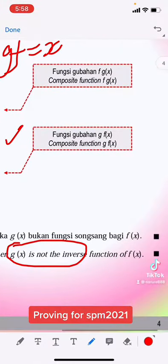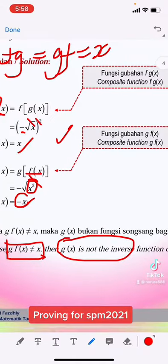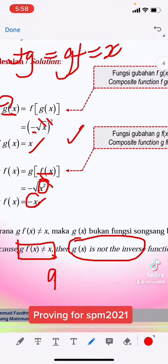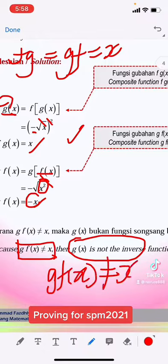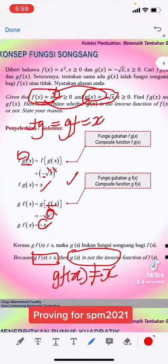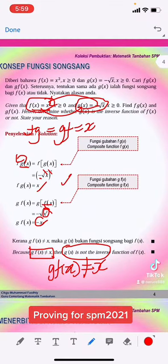So hence we can say that g(x) is not the inverse function of f(x). Why? Because this g(f(x)) is not producing the x. That is how you prove for inverse function. That's all, bye-bye.